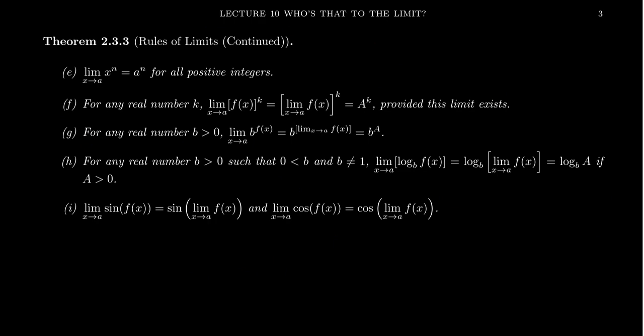Property F guarantees that for power functions, you can just take the limit of the base for any real number k. Property G: for any positive base b, take the limit as x approaches a of b to the f(x). Notice that here the base of the exponential is a constant — that's why we require it to be positive, because negative bases could give imaginary numbers. In this situation, when the base is constant and the exponent is a variable function, you can just take the limit of the exponent, and the limit will be b to the A.